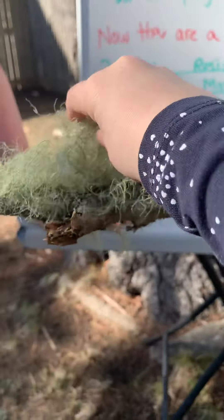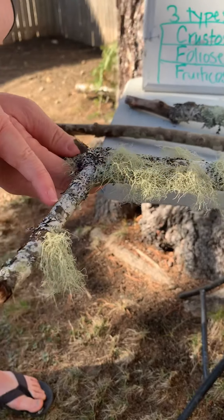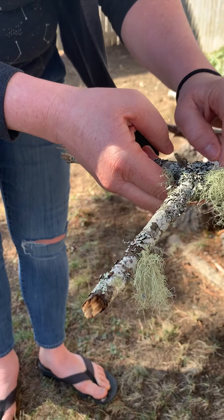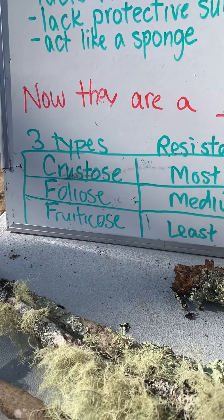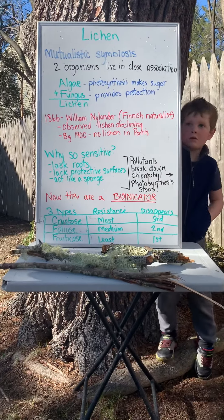There are three types of lichen. This one here, if you look carefully, is called crustose lichen — it looks really green, almost like it's part of the bark of the tree. This one is called foliose lichen. I think of it like foliage, like leaves, so it looks kind of leafy.